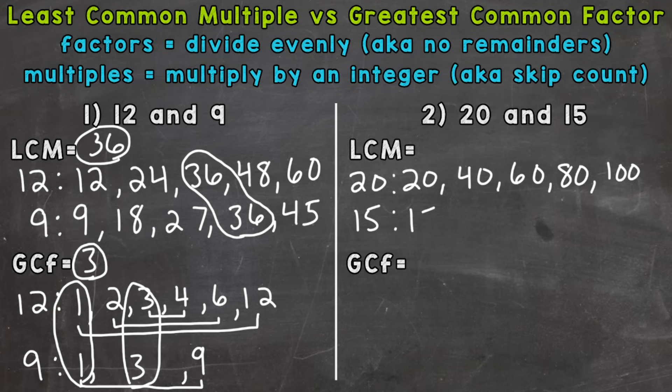15, we would do 15, 30, 45, and 60. And you'll notice that we have a match here. Always double check if you have anything that is smaller in value because remember least common multiple. 60 is going to be the least that they do have in common. So that's going to be our LCM or least common multiple.